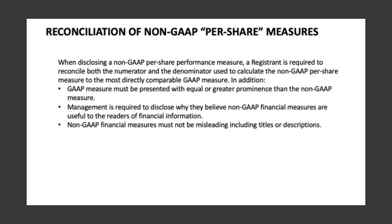Section 6: Reconciliation of Non-GAAP Per-Share Measures. When disclosing a non-GAAP per-share performance measure, a registrant is required to reconcile both the numerator and the denominator used to calculate the non-GAAP per-share calculation to the most directly comparable GAAP measure. Additionally, the GAAP measure must be presented with equal or greater prominence than the non-GAAP figure. Management must disclose what they believe non-GAAP financial measures are useful for to the readers of financial information. Non-GAAP financial measures must not be misleading, including in their titles or descriptions.